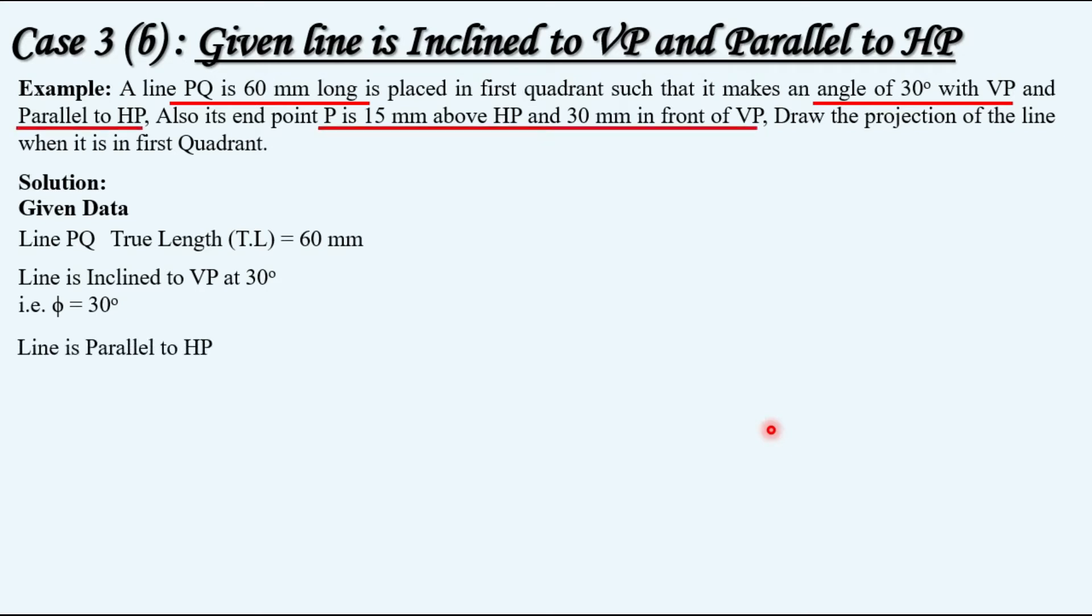Positions of front view and top view for endpoint P are given: P is 15 mm above HP, 30 mm in front of VP, and the line is given in the first quadrant. That means both endpoints P and Q are in the first quadrant.